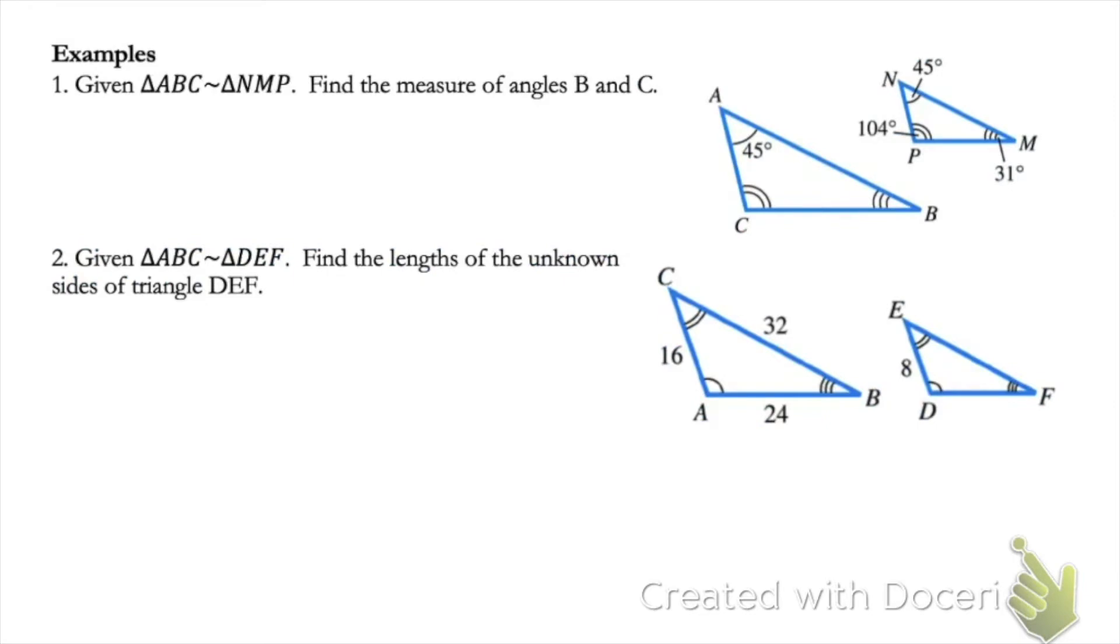In the following examples, we're going to find missing measures of angles and lengths. So in problem one, I have these two triangles as similar and I first need to find the measure of angle B. B corresponds to angle M because they both have the three congruent marks. Therefore, I know that angle B is 31 degrees.